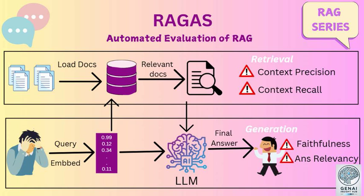One of the most impressive findings was the high accuracy for faithfulness — AI can be quite good at sticking to the facts when it's properly guided and evaluated. Of course, there's still room for improvement, especially when it comes to context relevance. Even with RGAS, we're still working on making sure AI consistently picks out the most relevant information. But the fact that we can now measure these things so precisely is a huge step forward.